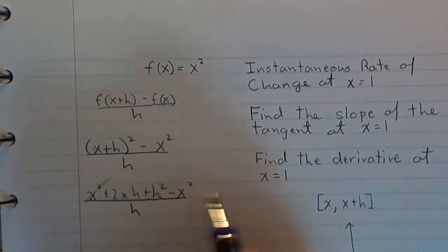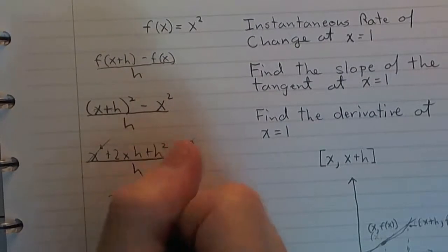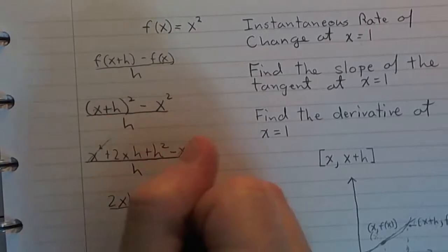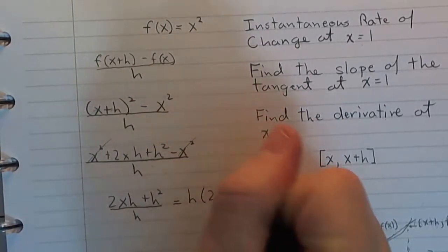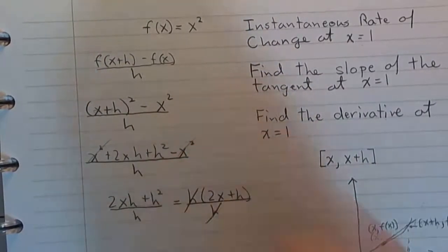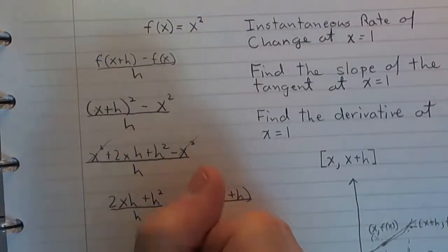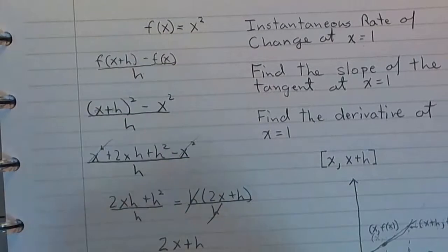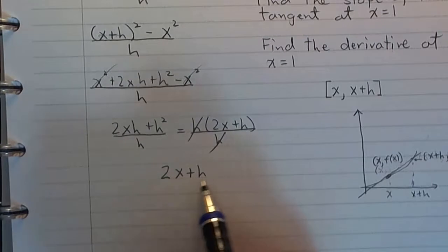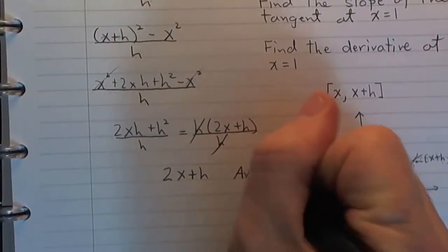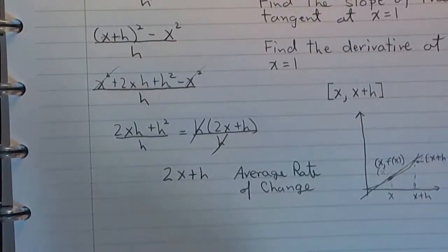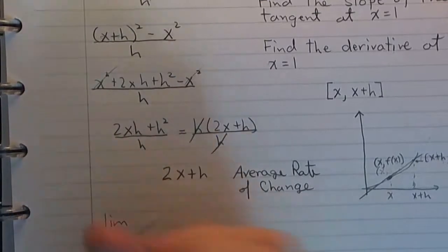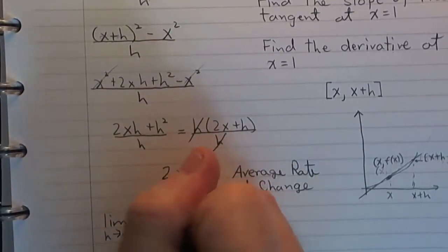Factoring h out of the numerator and canceling with the denominator, the average rate of change simplifies to 2x plus h. But this is the average rate of change, not the instantaneous rate of change. To get the instantaneous rate of change, we let h go to zero — we take the limit as h goes to zero of 2x plus h.